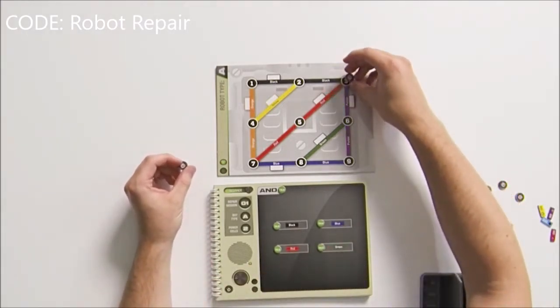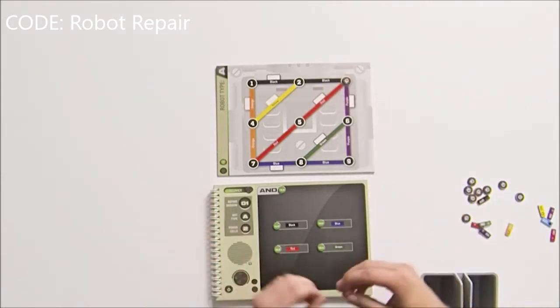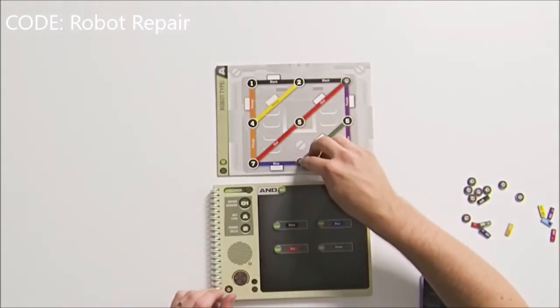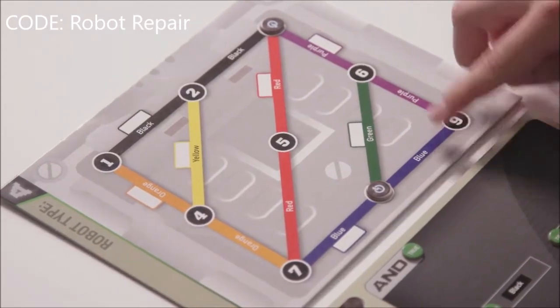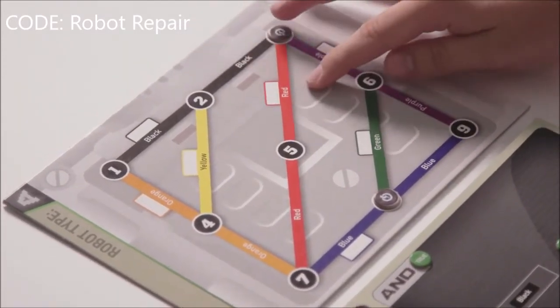In this case, the solution would be node number three and node number eight, because these connect to the green wire, the blue wire, the black wire, and the red wire.